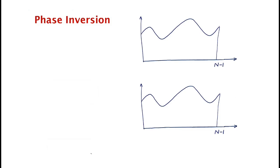There are two steps to the algorithm. The first is called phase inversion. Let me assume that the special entry is x star, so f of x star equals 1 — that's what we're looking for.